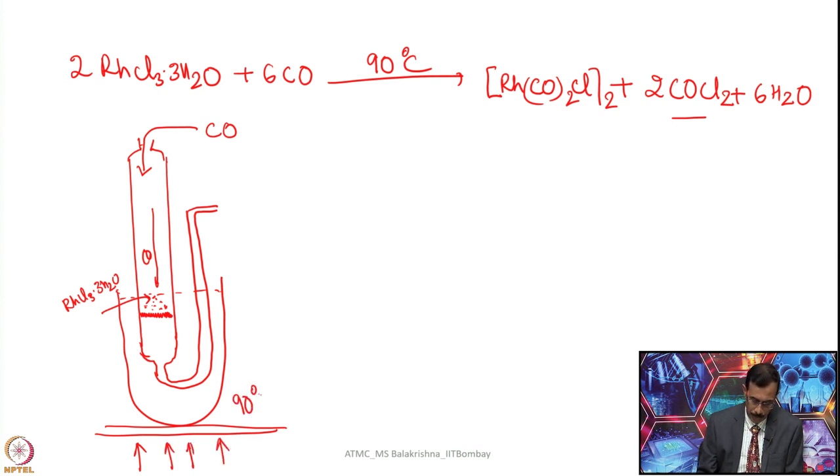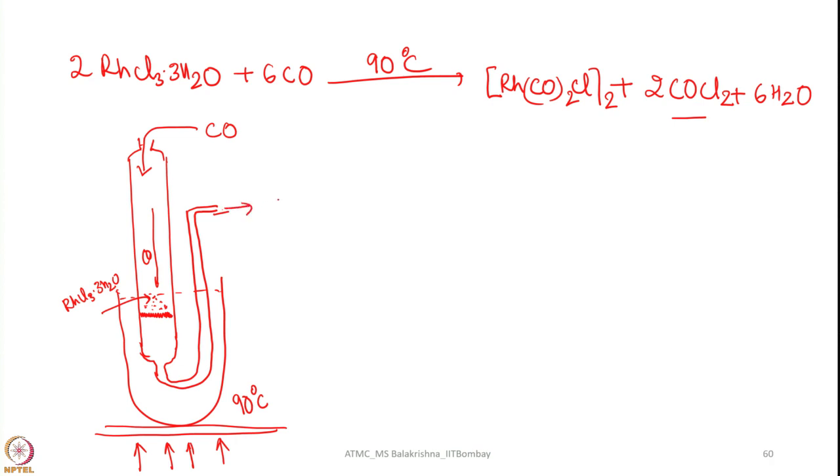It should not exceed beyond 90 degrees. In that case what happens? It may lose this water, in that case it becomes anhydrous and that is not reactive. So you will not get the product and here of course this is an outlet for CO. So in this reaction when you are doing this, the CO will react with rhodium chloride in this formation and of course here the phosphine will be coming out and water will be coming out.